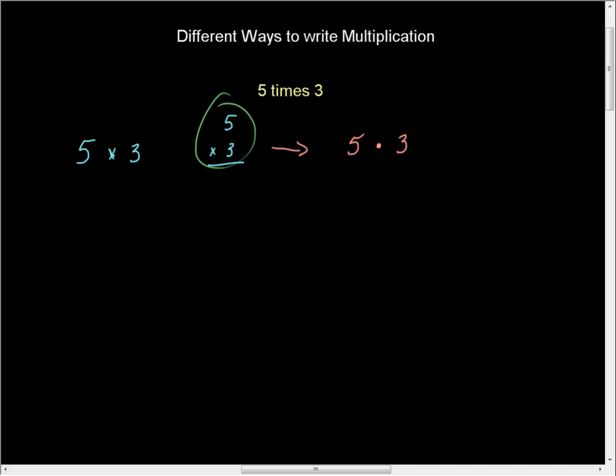And so, more often, we write it as 5 with a solid dot 3. So, 5 times 3 is written that way. Another way to write it is to use parentheses or brackets or braces. And so, just as a quick refresher, these are parentheses.